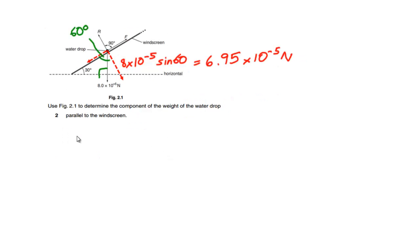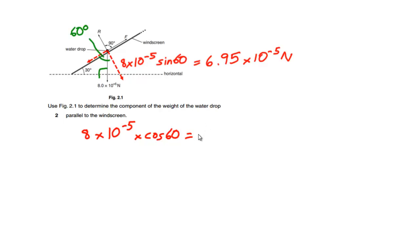The second part of this question asks us to calculate the component of the weight of the water drop that is acting parallel to the windscreen, acting down the windscreen. So if the perpendicular component was 8 times 10 to the minus 5 sine 60, this one which is touching the angle here will be 8 times 10 to the minus 5 multiplied by cos 60, which gives us an answer of 4.00 times 10 to the power of minus 5 newtons.